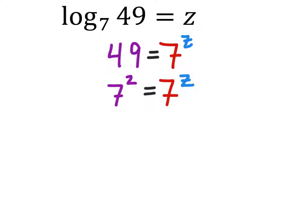And 49 is 7 squared, so I have 7 squared equals 7 to the power of z. Now that we have like bases, we can rewrite this using only the exponents. And I get 2 equals z.